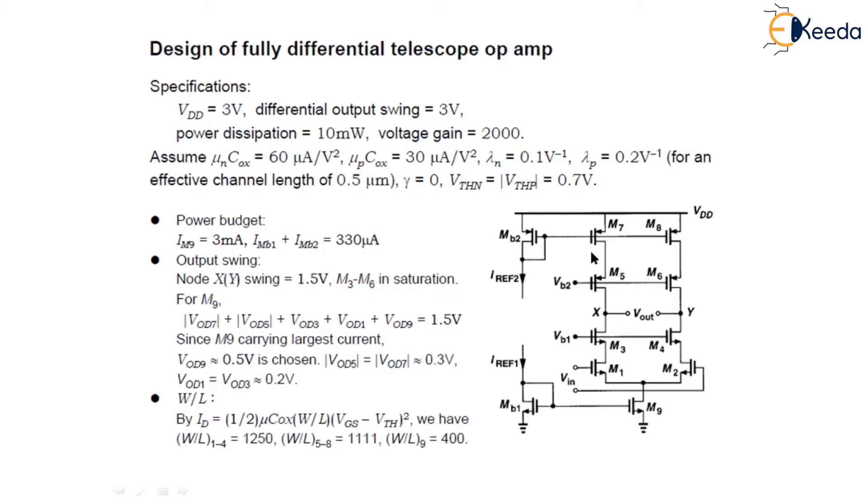While each cascode branch of the op-amp carries a current of 1.5 milliamperes. The output swing, that is the node X and Y, swings at 1.5 volts without driving M3 and M6 in saturation.